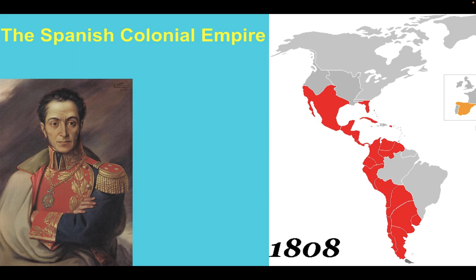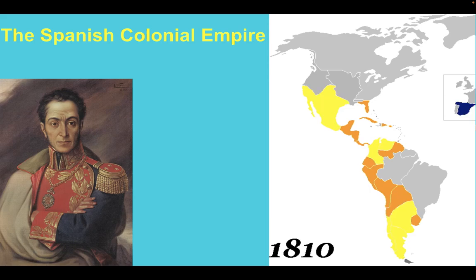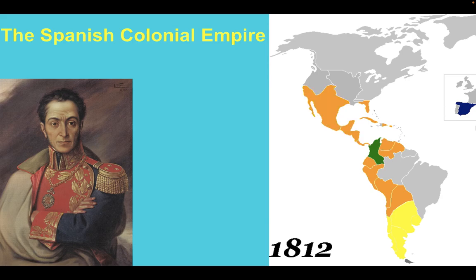Our story begins with the Spanish Colonial Empire. By 1898, the Spanish Colonial Empire was in heavy decline. It went from having governments all throughout South America, as you can see by this gif, to having loyalist governments, to having fully independent governments, to essentially only controlling Cuba.